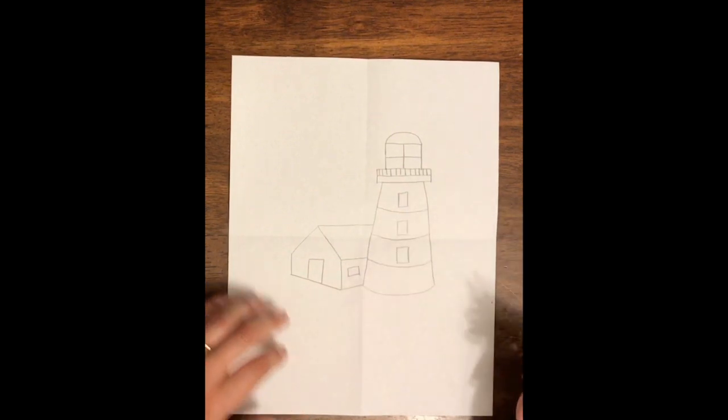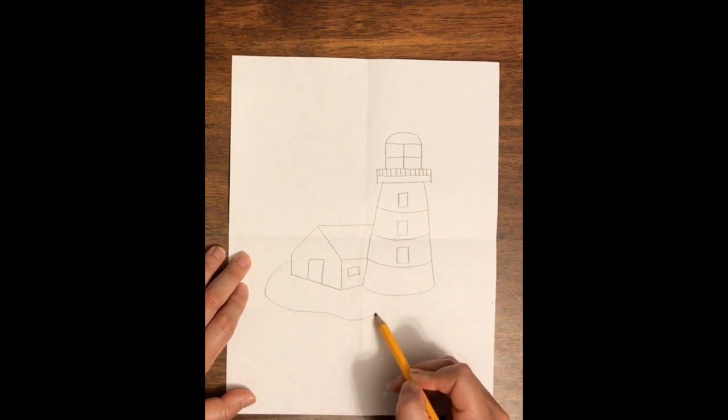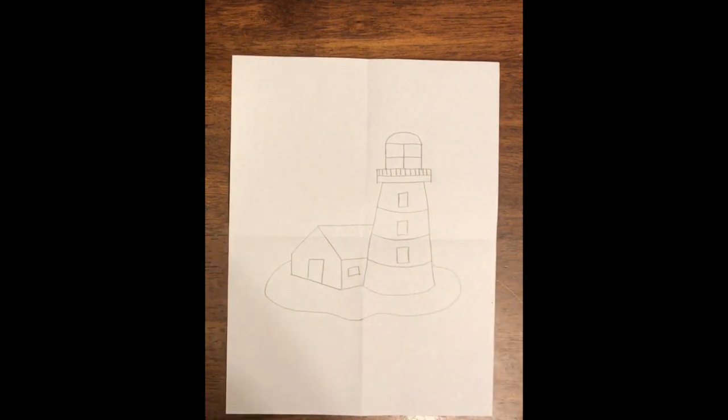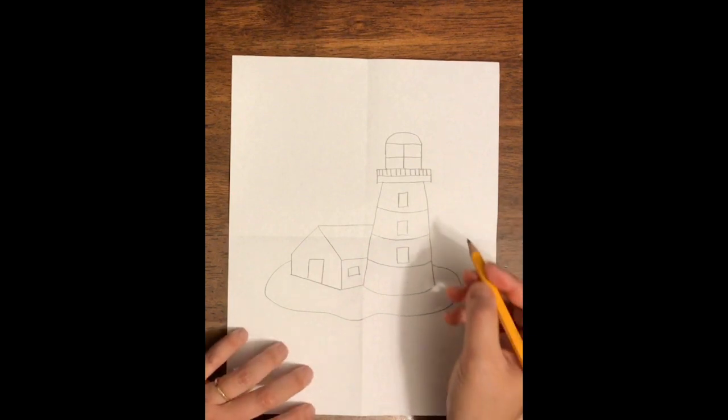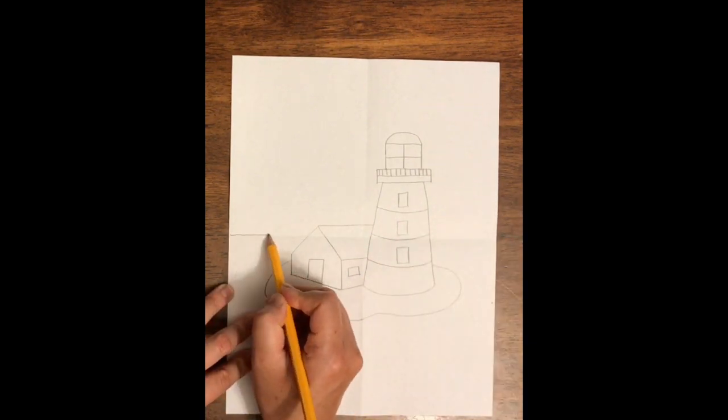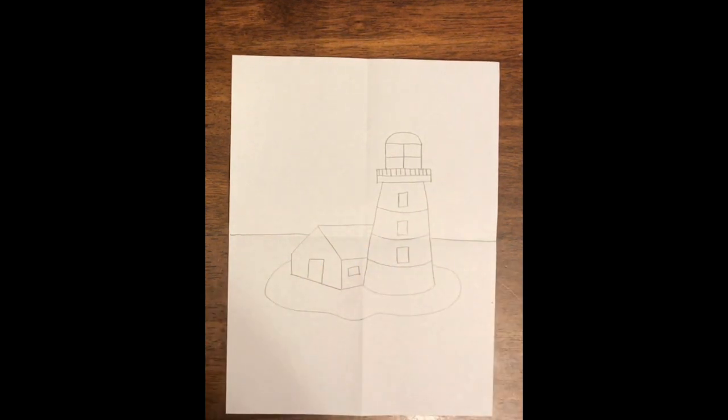Step five: draw the island from where the lighthouse is on, however way you'd like. Step six: draw the horizon line. That's easy - you can follow along on the folded piece of paper that you have, straight across. That's your horizon.